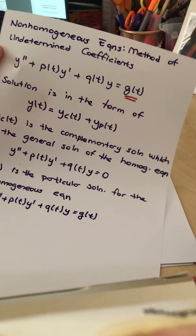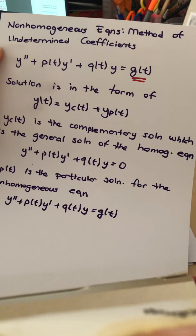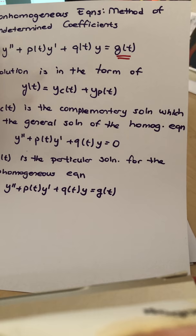Actually, you had this in the exam, so you should know it. Our solution, we are assuming, is in the form of y(t) = yc(t) + yp(t). So what are yc(t) and yp(t)?